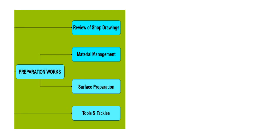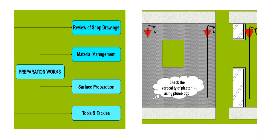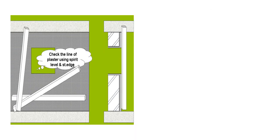Review of preparation works: it will start with the review of shop drawings, material management, surface preparation, and the tools and tackles. Before doing it, check the verticality of the plaster using the plumb bob, check the line of plaster using a spirit level, straight edge, etc. If there are any undulations, patch them up before fixing the tiles.